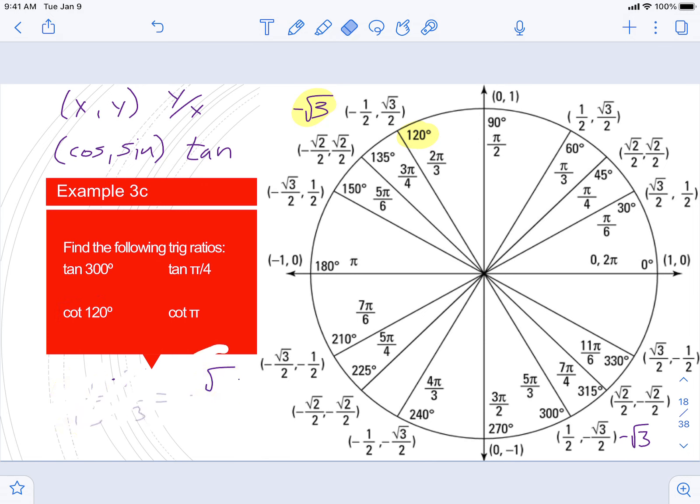The next two, tangent of pi over 4. So we're again finding pi over 4 on the unit circle, and on your unit circle there should be a 1, a positive 1 on the outside, because the x and the y match. So if you divide the same number by itself, for y over x, you will get 1. So tangent of pi over 4 is equal to 1.